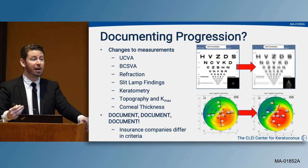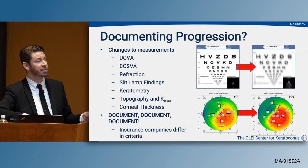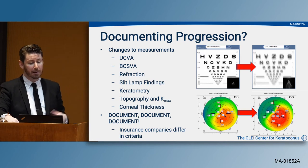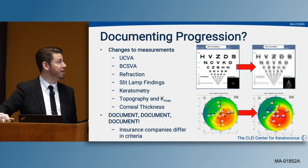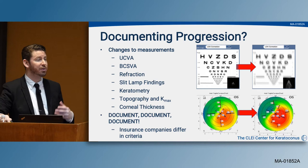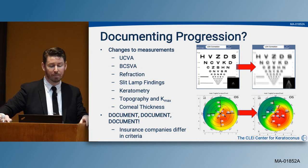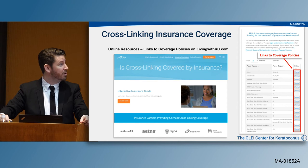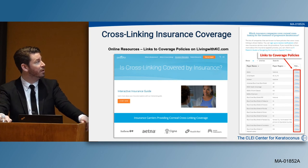When documenting progression, we look for changes in uncorrected visual acuity, best-corrected spectacle visual acuity, refraction, slit lamp findings, keratometry, topographies, K-max, and corneal thickness. It's important to document these because insurance companies differ in criteria for documenting progression. Avedro and Glaukos have worked diligently to provide a resource for both patients and doctors to review the various commercial plans available.